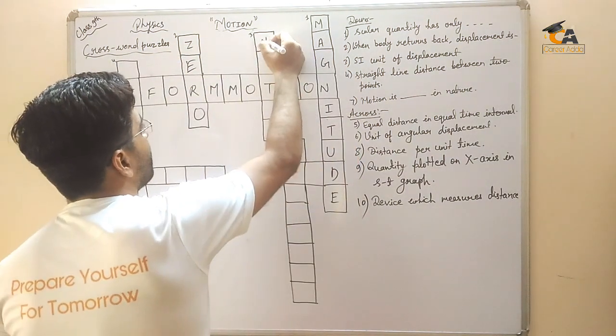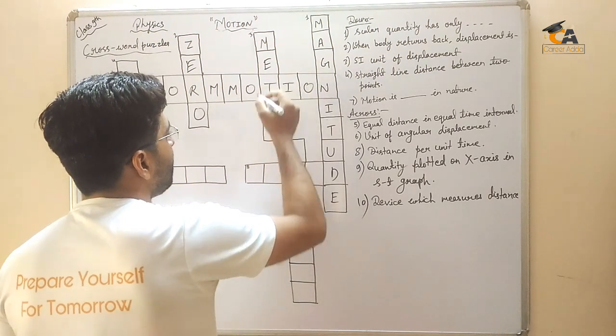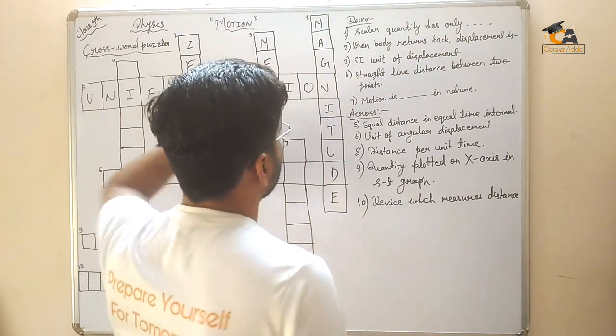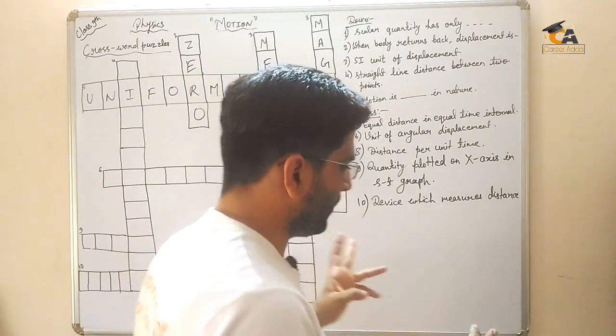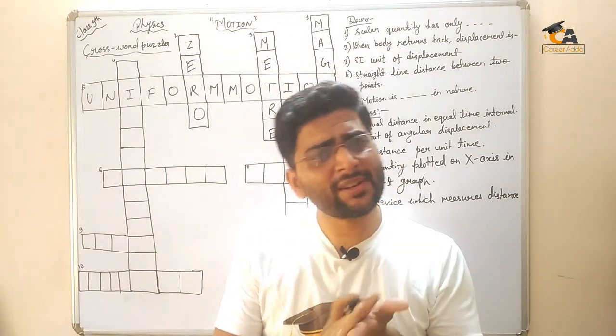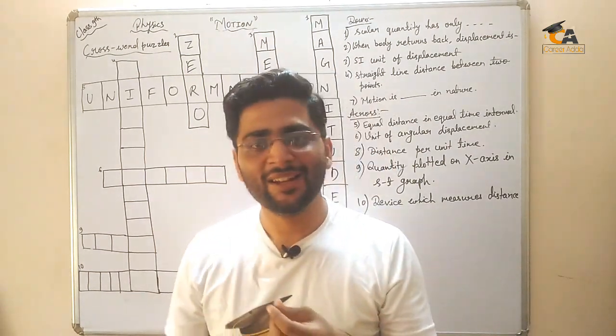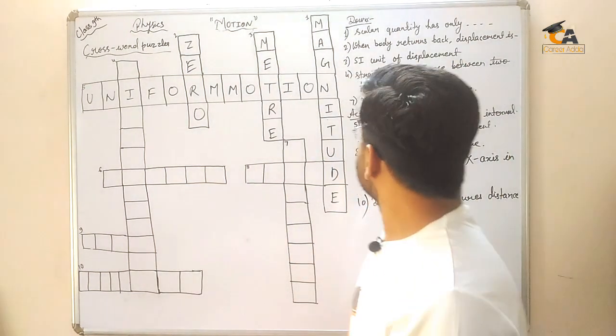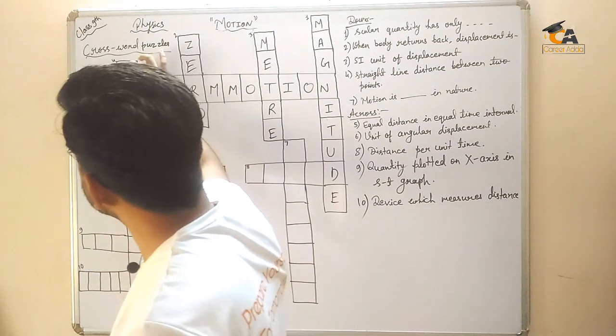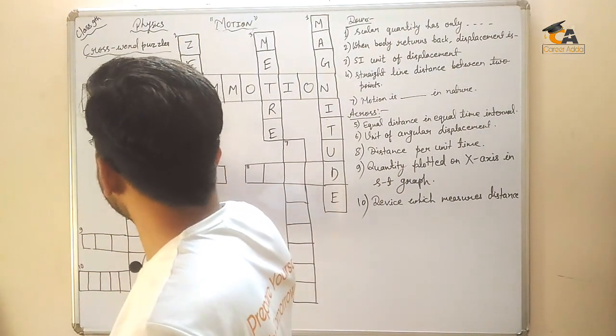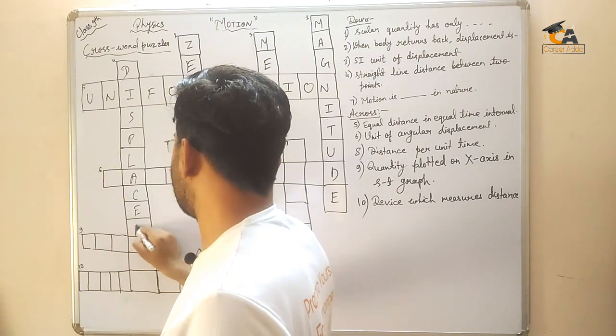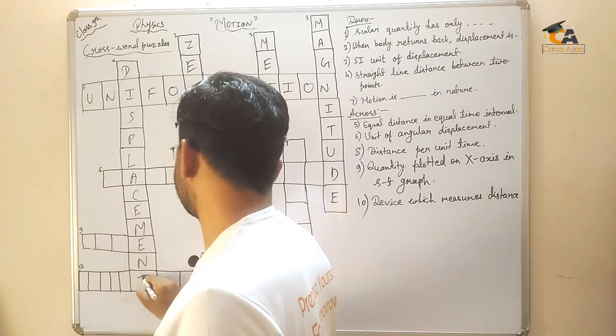Meter. Straight line distance between two points. This is the definition of displacement. D-I-S-P-L-A-C-E-M-E-N-T.